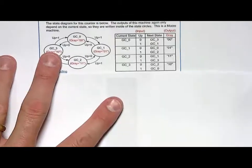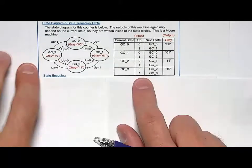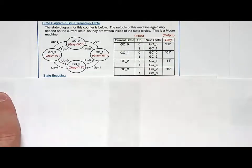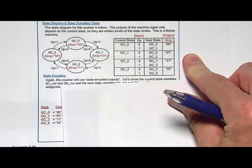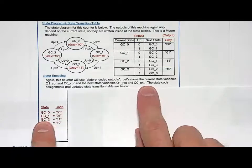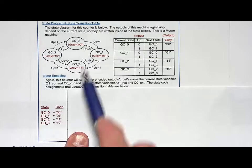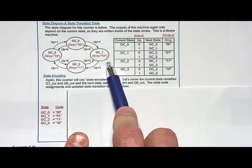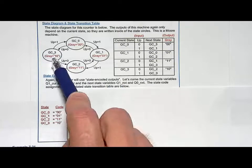Okay, so let's start synthesizing it. First thing we want to synthesize is the state memory. So let's start doing the state encoding. We are going to use state encoded outputs. So we want to choose state codes that match the outputs. I'm going to choose GC zero to have a state code of 00, GC one to be 01, GC two is 11, GC three is 10. So those are my state codes.